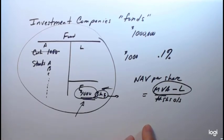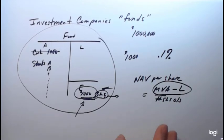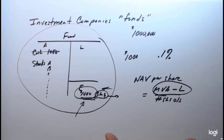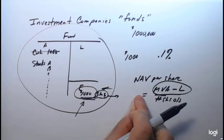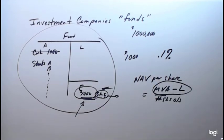Soon we'll look at funds that charge loads or front-end fees, where you pay a little more than the net asset value — a price called the offering price. But let's focus on net asset value for now, because this is the key to understanding how much it costs to get into a fund.